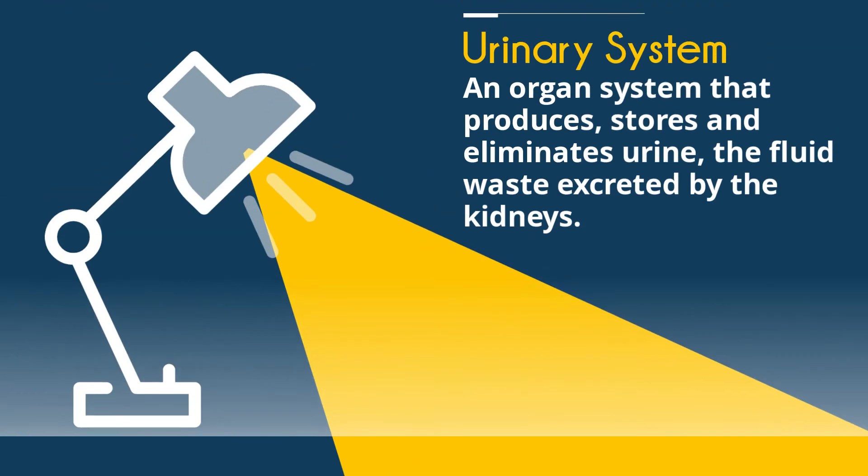The urinary system — an organ system that produces, stores, and eliminates urine, the fluid waste excreted by the kidneys.